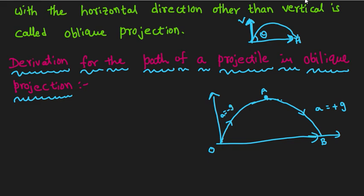In this case, the horizontal velocity is constant. In this direction, it has two components: we have a vertical component and we have a horizontal displacement Y.